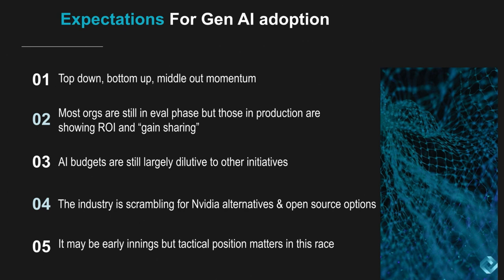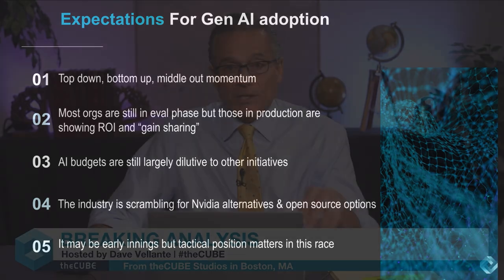It may be early innings, but tactical positions matter in this horse race. The reason is having a lead is important when things are moving this fast, because the early players are getting the best feedback on what works and what doesn't. They're getting more data and training the models at a very fast pace, learning about monetization models, governance, and best practices, and really driving thought leadership forward. Admittedly, the pioneers a lot of times take the arrows. But the momentum is so strong that I'd rather be on the lead in this horse race than starting from the back of the pack.